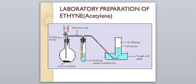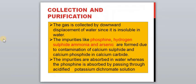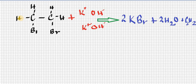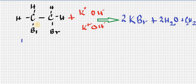Another preparation of ethyne is from 1,2-dibromoethane, also known as ethylene dibromide. In 1,2-dibromoethane, there is a bromine atom at the first position and another bromine at the second position — hence the name 1,2-dibromoethane. This is the structure of ethylene dibromide.